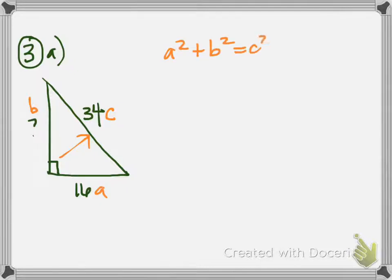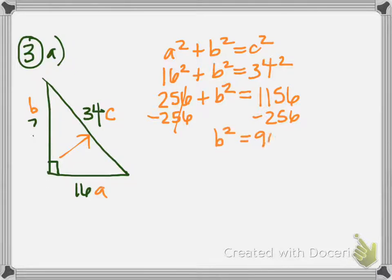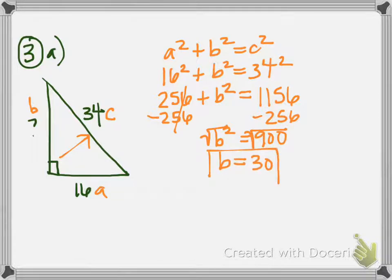A² + B² = C². So we have 16² + B² = 34². 16² = 256 and 34² = 1156. To get B² by itself, we subtract 256 from both sides, so B² = 900. We take the square root of both sides — the square root of 900 is 30 because 30 × 30 = 900. So B has a length of 30, which is the missing side of our triangle.